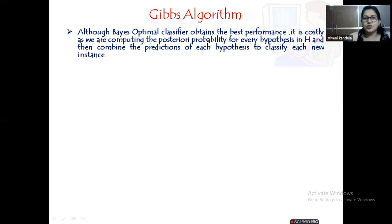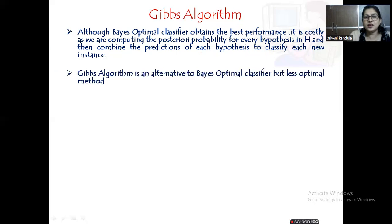Why is it costly? Because we are computing the posterior probability for every hypothesis and then combining the predictions of each hypothesis to classify the new instance. Every time we are multiplying the prediction with the posterior probability, making it costlier.